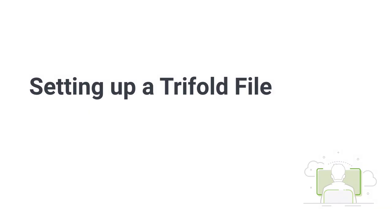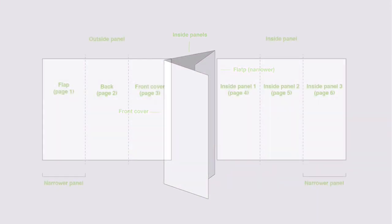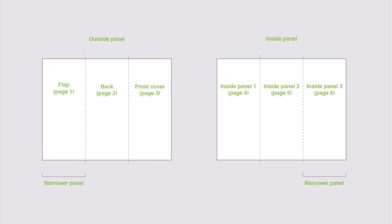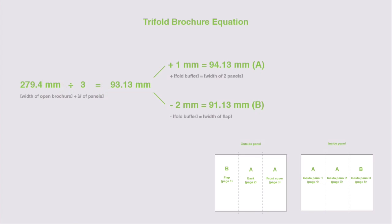Hi there, and welcome back to this course: How to Create a Restaurant Menu Template. In this second part of the course, we'll be creating a trifold menu. We will learn how to set up a trifold document in InDesign and apply everything we learned in the previous lessons to create a different style menu. A trifold brochure is a page containing three panels per side. Two of the panels are the same width, while one panel is slightly narrower to accommodate for the fold. Besides this menu, a trifold brochure is great for marketing purposes because you can pack a lot of information and divide it through the six panels while telling a good story.